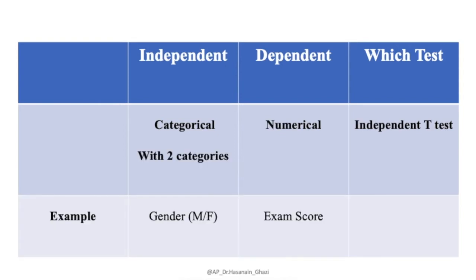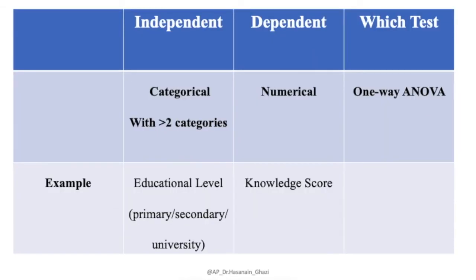If the independent variable is categorical with two categories — such as gender: male and female — and the outcome is numerical, like an exam score, weight, or height, we use the independent t-test, also called the student t-test.